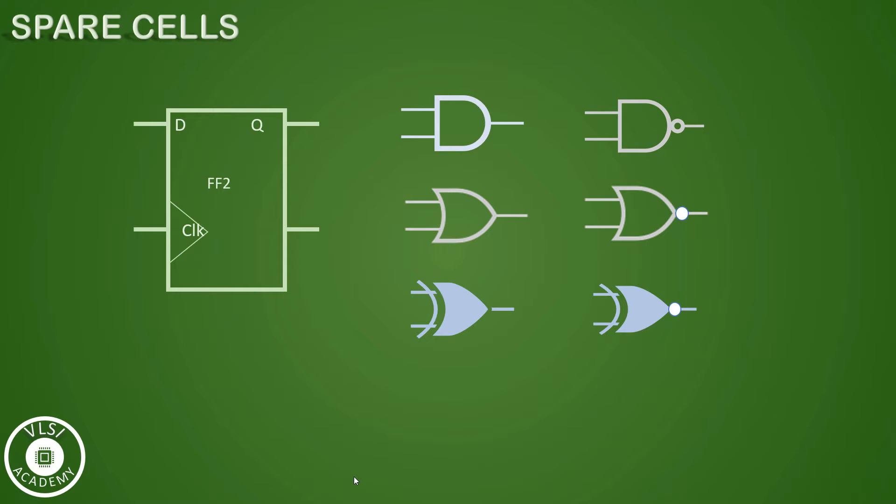Ideally spare cells do not perform any logical operation in the design and act as a filler cell only. When spare cells are inserted in the design, their inputs are either tied to the ground like this, or their inputs can be tied to the VDD also like this. It depends what you want to do, but you have to tie the inputs either to the VDD or to the ground.